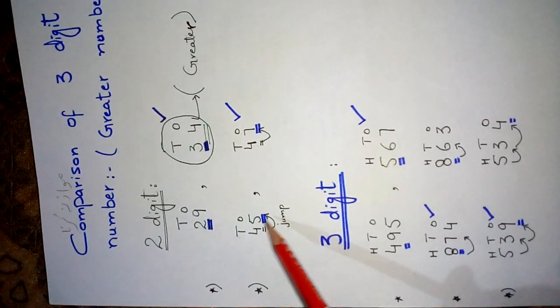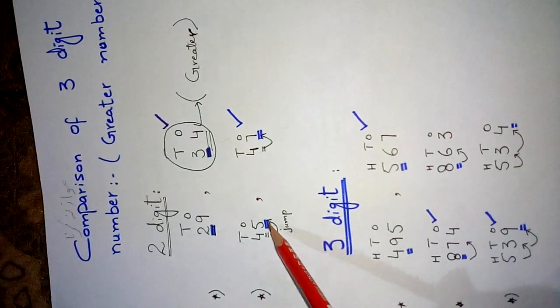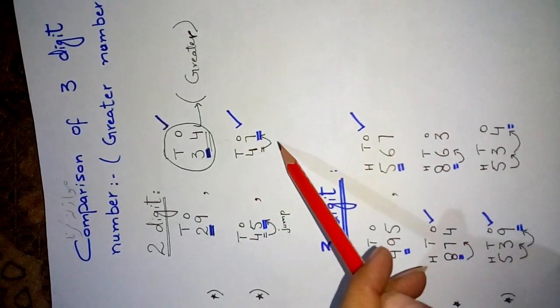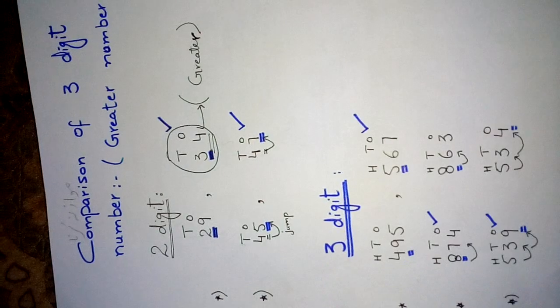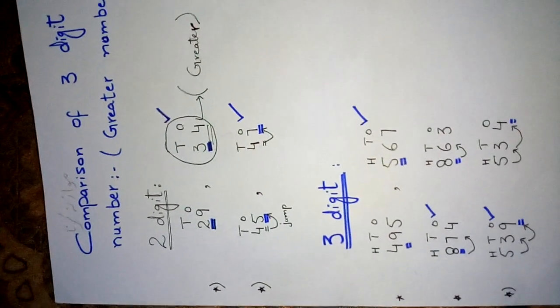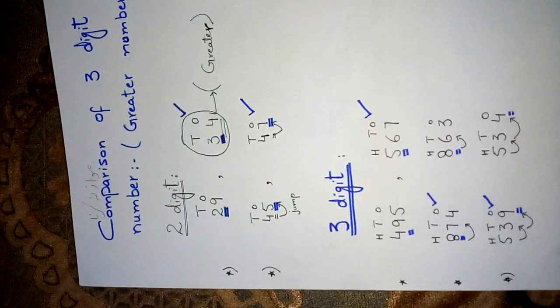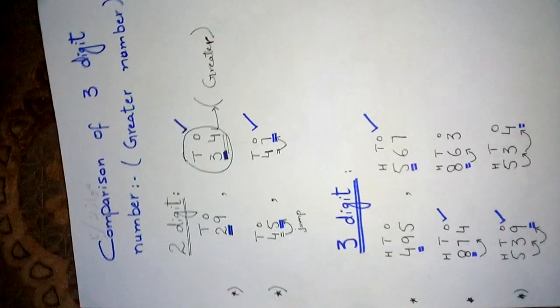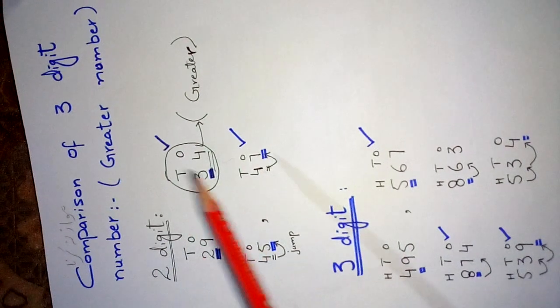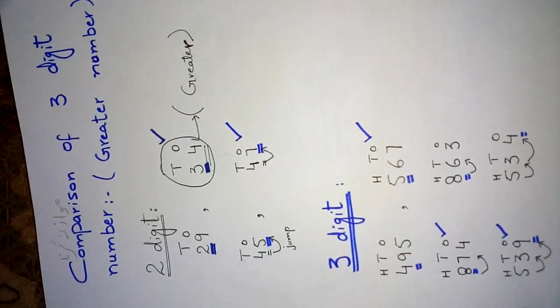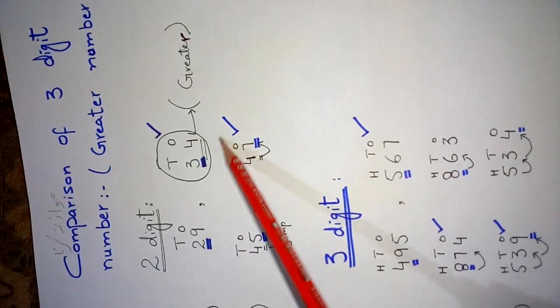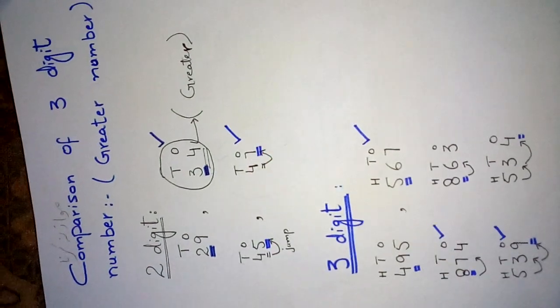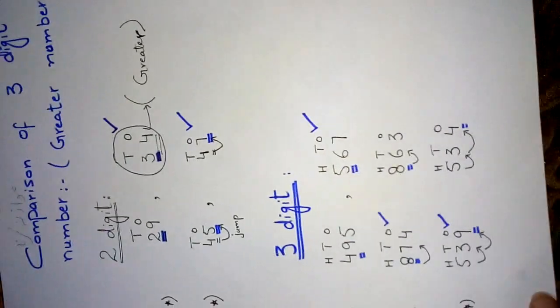After jumping, the next digit is 5 and 7. Now we can easily compare 5 and 7. Which one is greater? 7 is greater. It means the whole number, 47, is greater. So take out the greater number, 47.